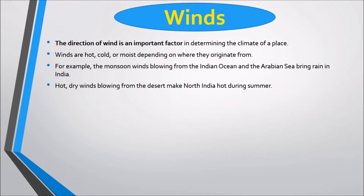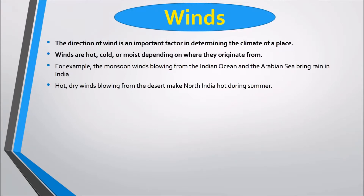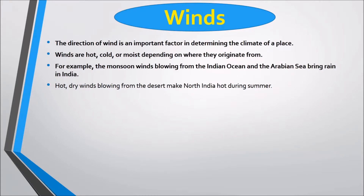The direction of wind is an important factor in determining the climate of a place. Winds can be hot, cold, or moist depending on where they originate. For example, the monsoon winds blowing from the Indian Ocean and the Arabian Sea bring rain to India, while hot dry winds blowing from the desert make north India hot during summer.